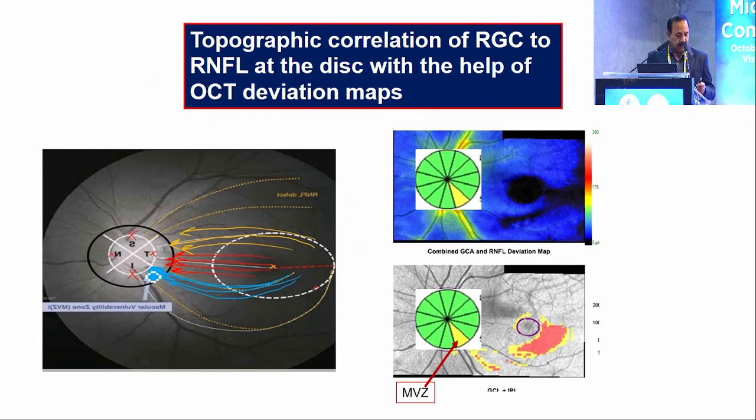The most important thing is topographic correlation. We know that the macular fibres, suppose this is the left eye, will be entering here. And the temporal fibres nearer to the fovea don't enter here. The most important part is they enter at the left eye at the 5 o'clock position. These fibres also will enter in this area. Therefore, this is a highly crowded area, and this is known as the macular vulnerable zone. That is why you will get more upper arcuate scotomas when compared to lower arcuate scotomas.